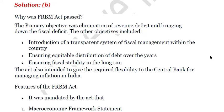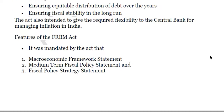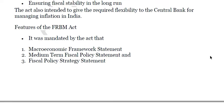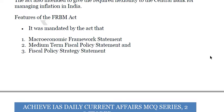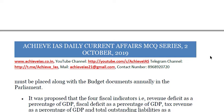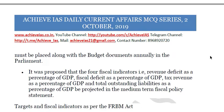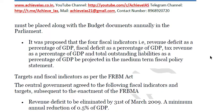The Act also intended to give the required flexibility to the central bank for managing inflation in India. Features include a macroeconomic framework statement, a medium-term fiscal policy statement, and a fiscal policy strategy statement — all of which must be placed along with budget documents annually in Parliament. It was proposed that four fiscal indicators — revenue deficit as a percentage of GDP, fiscal deficit, tax revenue, and total outstanding liabilities — be projected in the medium-term fiscal policy statement.